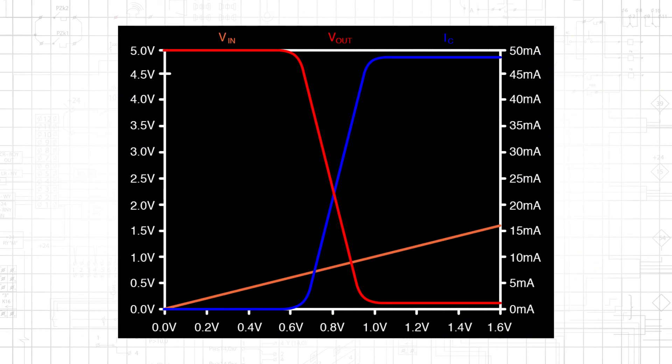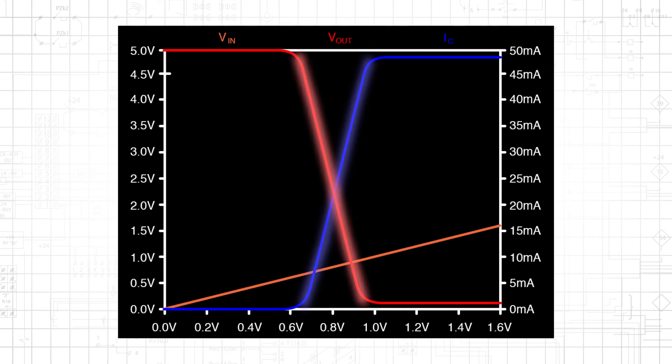This next plot clarifies the relationship between collector current and forward bias of the BC junction. Vout, which is the same as the collector voltage, begins at 5 volts and decreases as increasing collector current causes a progressively larger voltage drop across RC.